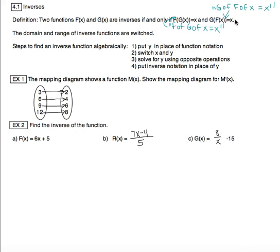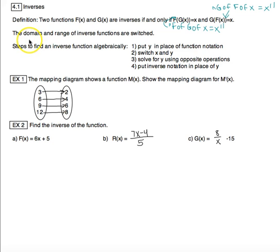A simpler way to think about it — which isn't the technical definition but — inverse functions are functions that undo each other, just like inverse operations undo each other. Another thing that's always true when talking about inverses is that the domain and range of inverse functions are switched. Whatever was the input in the original function becomes the output in the inverse function and vice versa, so it's like switching the x and y.